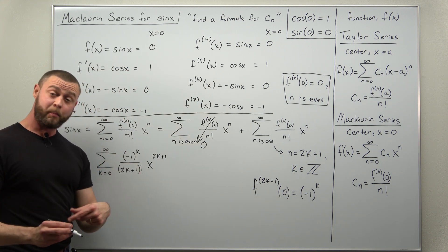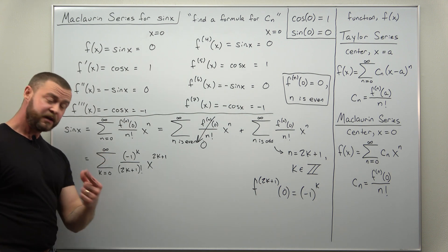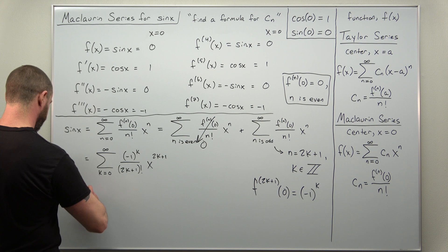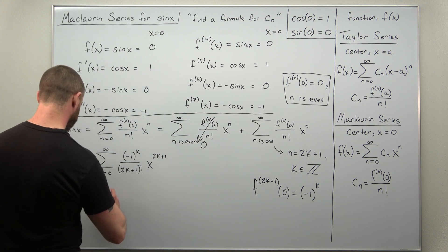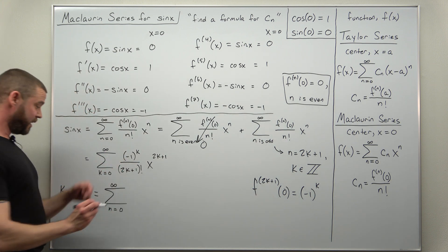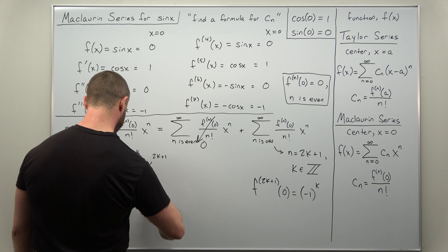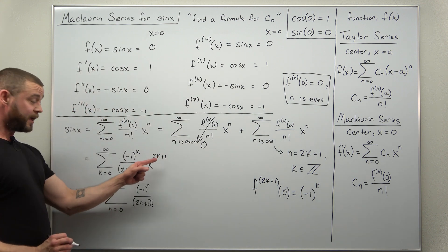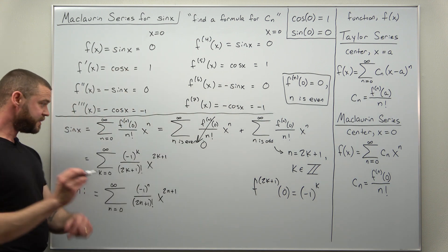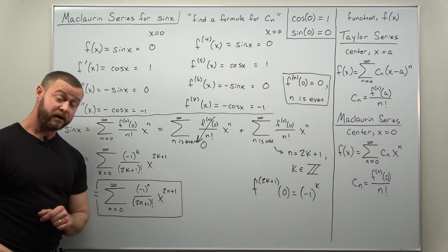To make this look a little more normal, in your Calculus 2 course n is usually used as your index, so let's change all k's to n. What we get is the sum from n equals zero to infinity of negative one to the n, divided by 2n plus one factorial, times x to the 2n plus one. And that is our Maclaurin series for sine of x.